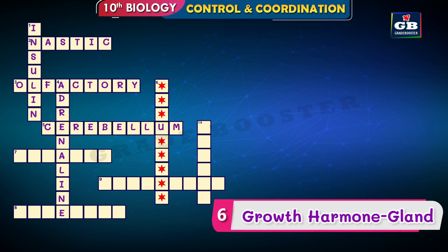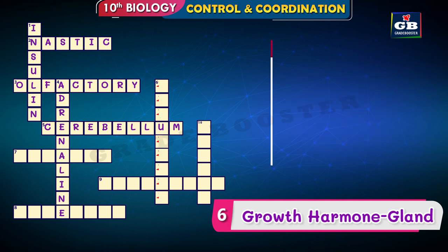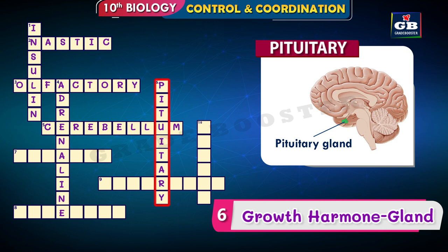Six down — the hints: growth hormone, gland. It is a gland and it secretes growth hormone. The answer is pituitary. Pituitary secretes the growth hormone, which is also called somatotrophin.